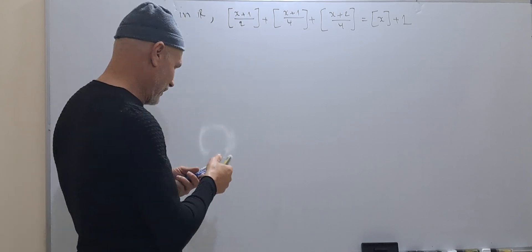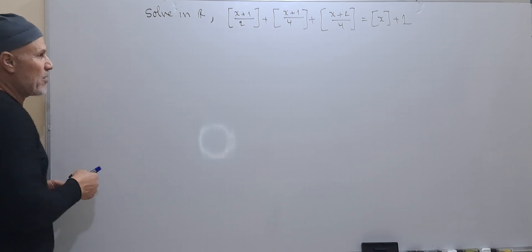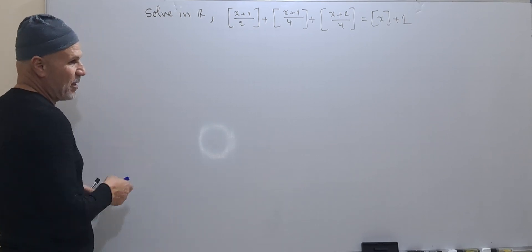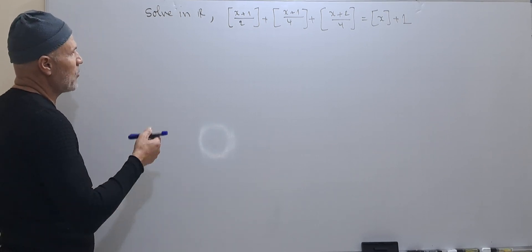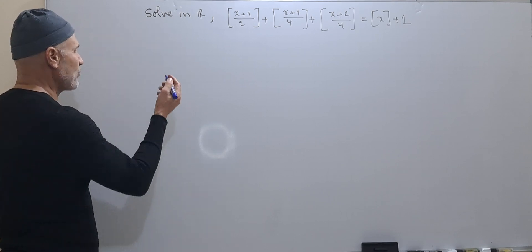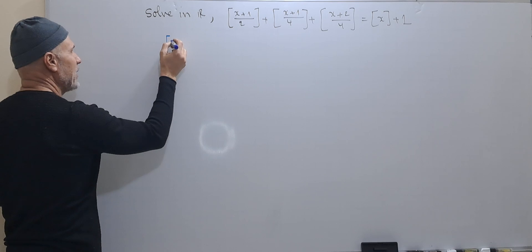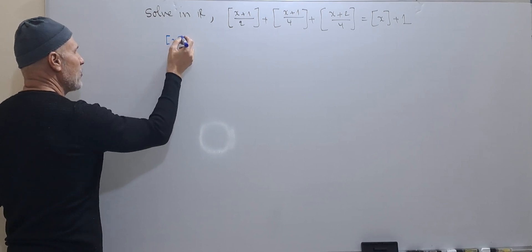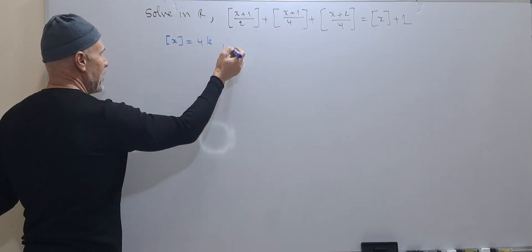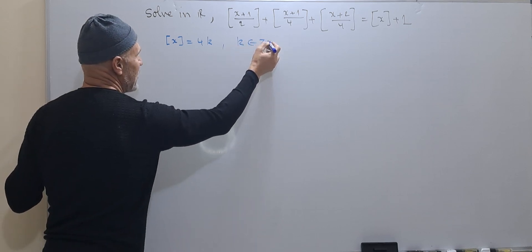We can have this idea. As a proposed solution — this solution is not unique, it is one of the possible solutions — let us take the integer part of x equal to 4k, such that k belongs to ℤ.